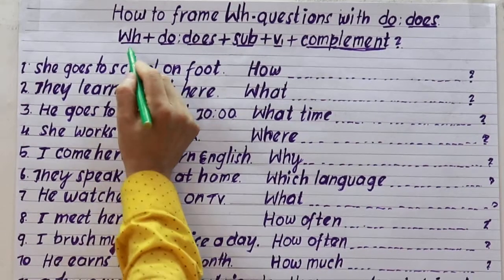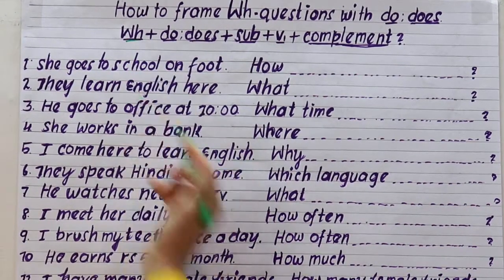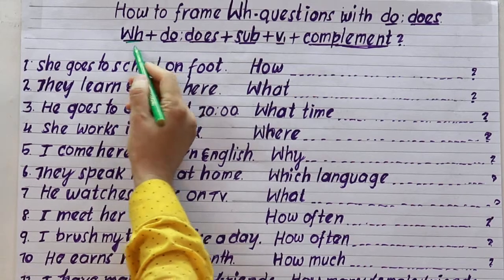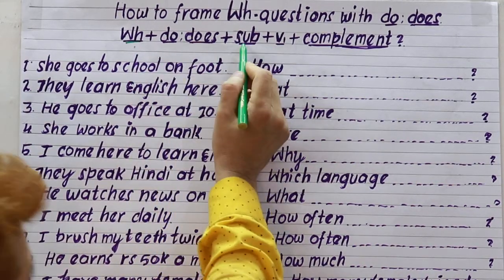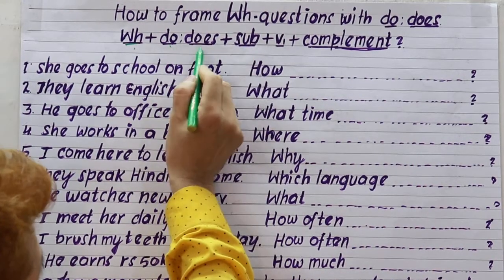First of all, WH — WH is: what, where, how, and so on. Then how to make the question: subject, do or does, then the verb, then the complement.